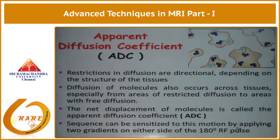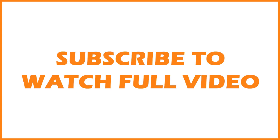Basically, what we do is apply two gradients on either side of the 180-degree pulse.